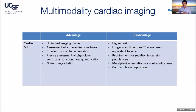There are disadvantages, of course. MRI tends to be expensive, has a longer scan time than CT, and sometimes equivalent to echo when you think of complex congenital heart disease — sometimes up to an hour or more. There are requirements for sedation in certain populations. There are limitations related to metal in the chest or devices such as pacemakers. And there is concern about contrast used for MRI and resultant deposition within the brain — to date, no negative effects have been shown, but we're keeping a close eye on it.